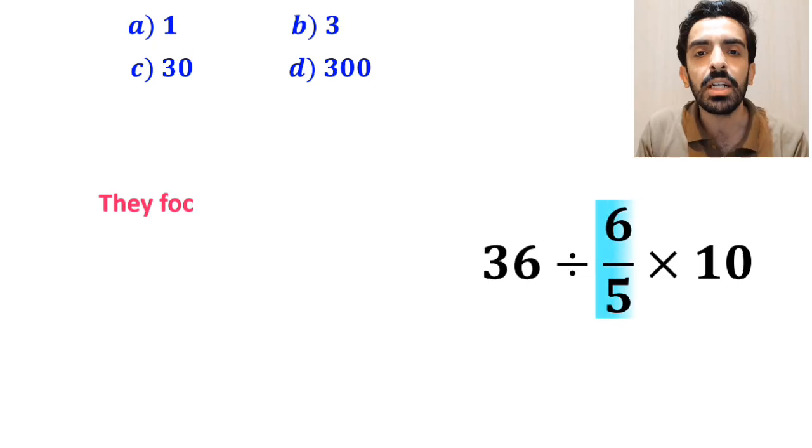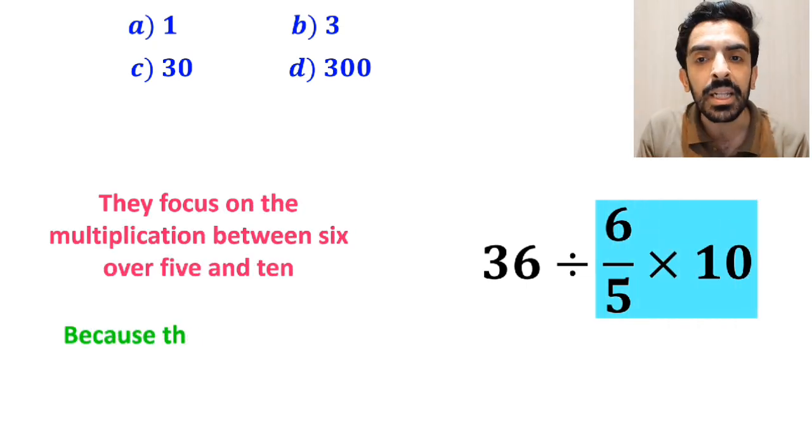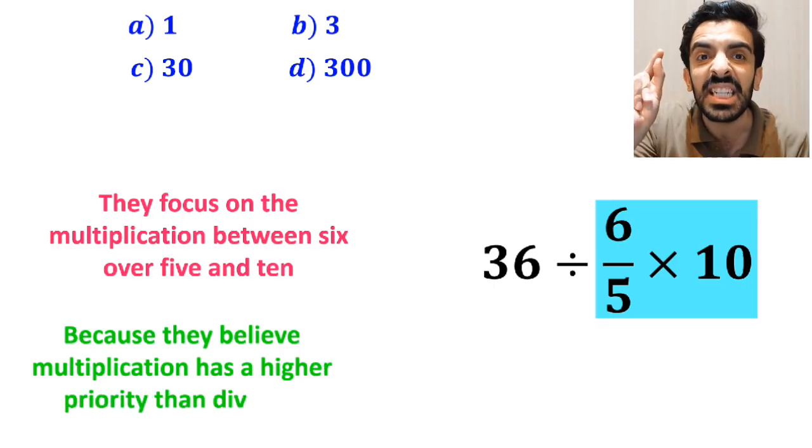And the next step, they focus on the multiplication between 6 over 5 and 10, because they believe multiplication has a higher priority than division.